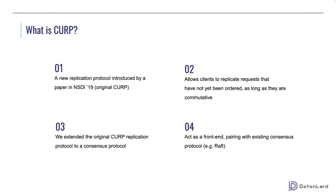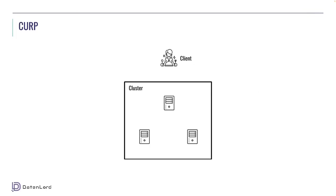In X-Line, CURP acts as a front-end paired with RAFT to maintain data consistency. Let's talk about CURP's procedure. We still have a cluster consisting of three replicas and a client. Now, instead of the client sending requests to a single replica, it sends the request to all replicas in the cluster. Each replica receives the client request, processes it, and replies the result to the client.